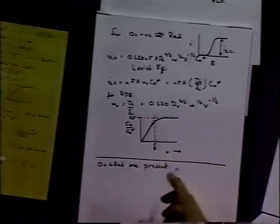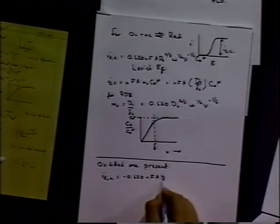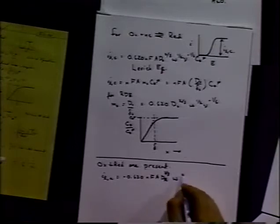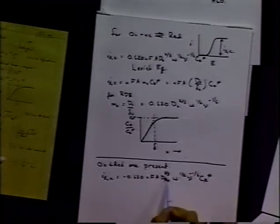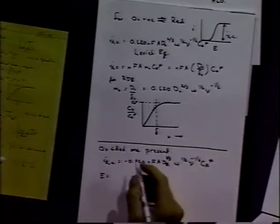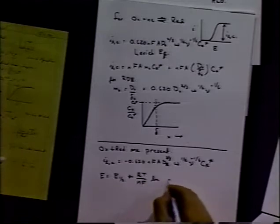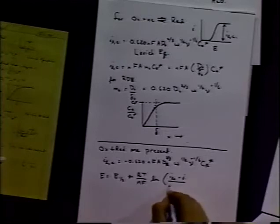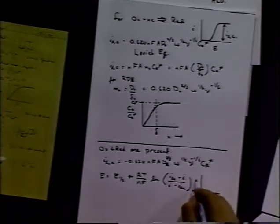Again reversible—no kinetic effect. The limiting anodic current is equal to minus 0.620... And we can use all the same things we used before. If you remember, we derived this case in the first or second chapter. We said that E equals E one half plus RT over NF, natural log of the limiting cathodic current minus the current, and the current minus the limiting anodic current. That gives us the wave shape.